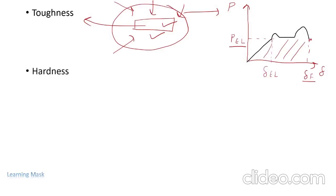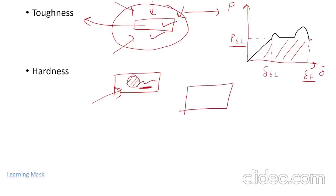Hardness is the ability of a material to resist indentation or surface abrasion. Suppose we have a material and we apply a load — there are no surface cracks, no indentation, and no abrasion. For example, if we drop a heavy ball onto this material, no depression or cracks are formed. If no crack is formed, the material is a hard material. So hardness is the ability of a material to resist surface abrasion, cracks, and indentation.